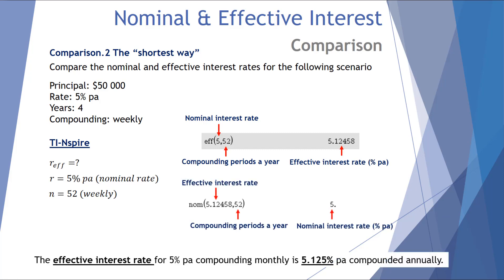As shown before, this can be reversed using the nominal equation on the TI-Inspire calculator. We enter in the effective interest rate and the compounding periods per year, and it returns the nominal interest rate.